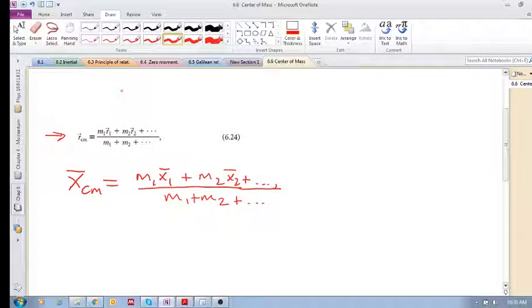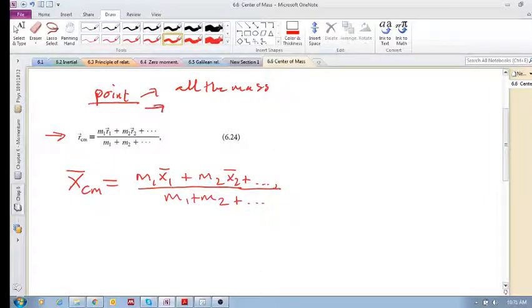We're carrying on with 6.6. We saw that the center of mass is a point in space where it is as if all the mass is concentrated at this point, and it's a point where you can balance the object. Now how do we actually calculate it?